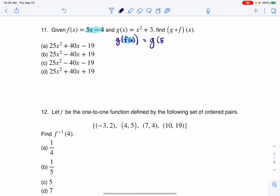This is gonna become g of 5x minus 4. And then I'm gonna take what's inside my parentheses, my grouping symbols, and substitute that into the x part of the g of x function.